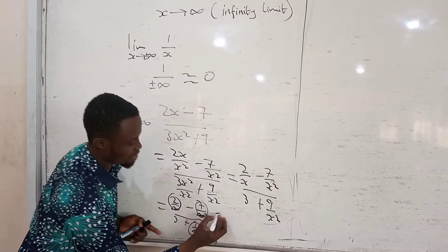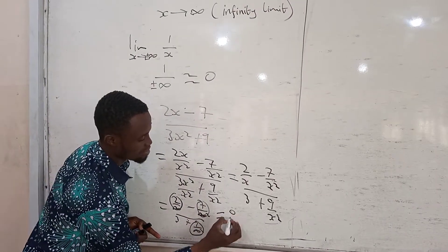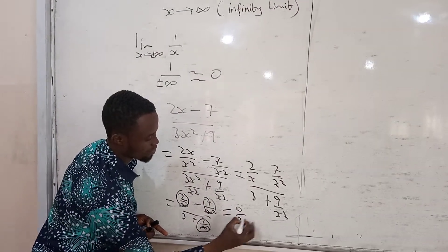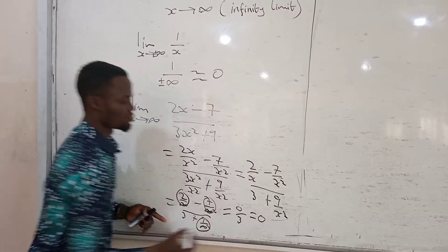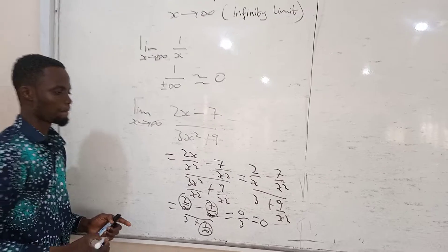At the end, we have 0 minus 0, all divided by 3 plus 0, which gives us 0 over 3, equal to 0.